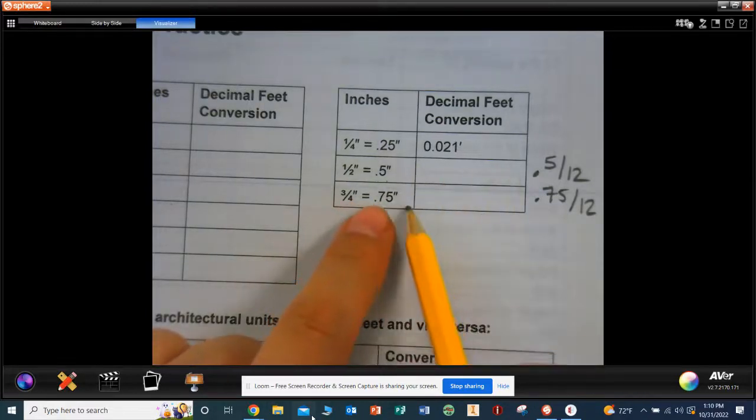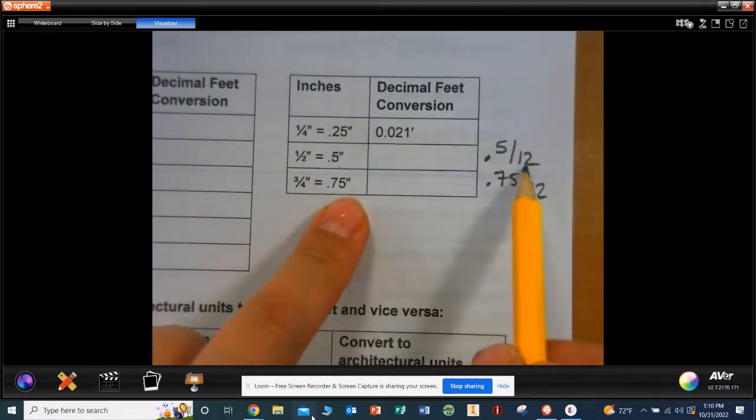Okay, Nathan, did you do these two? 0.5 divided by 12, 0.75 divided by 12. Please go do it now.